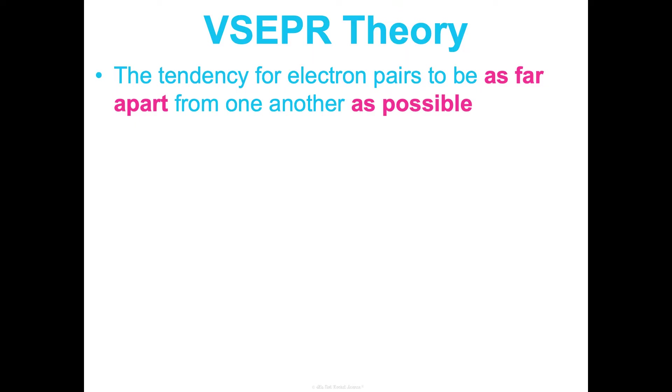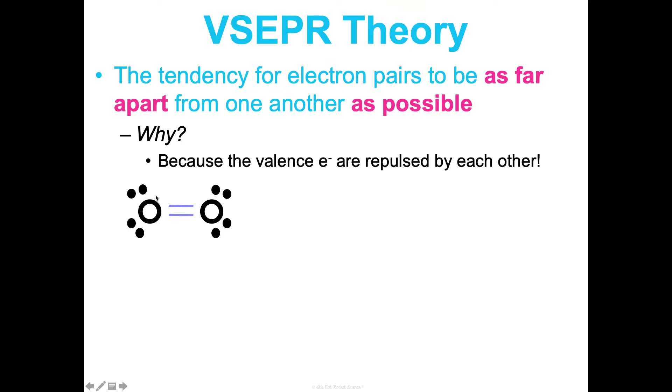VSEPR stands for the Valence Shell Electron Pair Repulsion theory. It describes the tendency for electron pairs to be as far apart from one another as possible. Why? Because the valence electrons are repulsed by each other. Remember, like charges repel; they don't want to be near each other. When we draw this, we're not going to draw these electrons right here because they don't want to be close to all these electrons. They all want to be as far apart as possible. We see that here. I'm not going to expect you to do these perfectly at all; we will learn more about this molecular geometry in Concept 5. But I do want you to consider, as you're drawing, how can I space these out as much as possible?